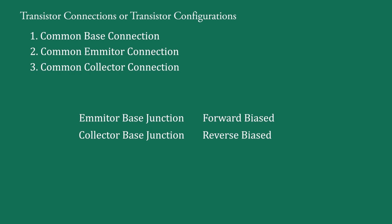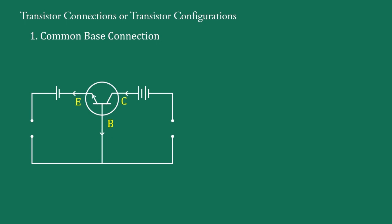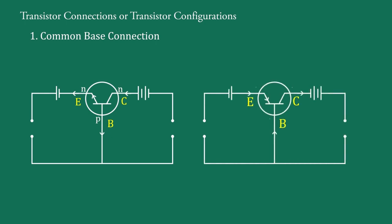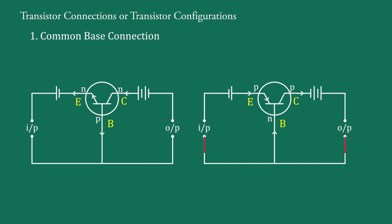First of all we will take common base connection. This is the common base circuit for NPN transistor and this is for PNP transistor. Here the base is common at input terminals and at output terminals, so it is called common base connection. In the NPN transistor, the emitter is of N type and it is connected with the negative terminal of the battery, which means the emitter is forward biased.